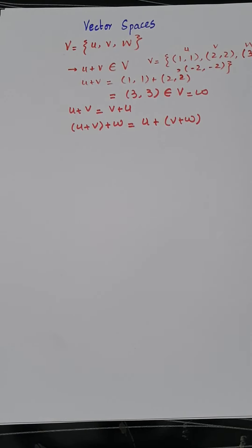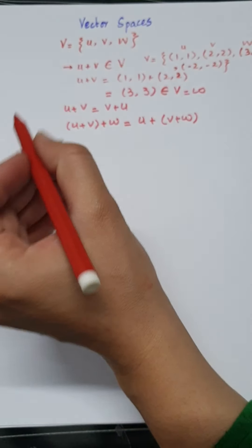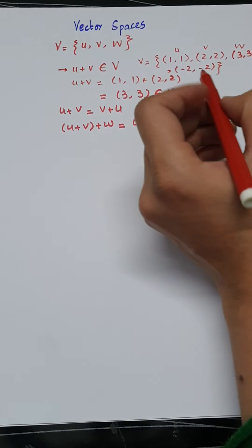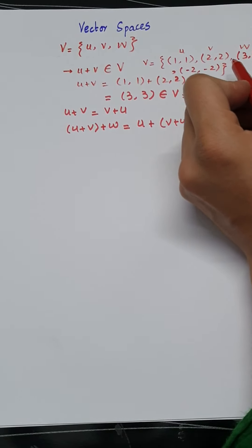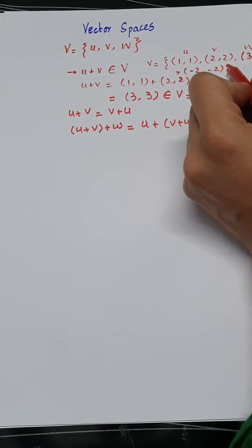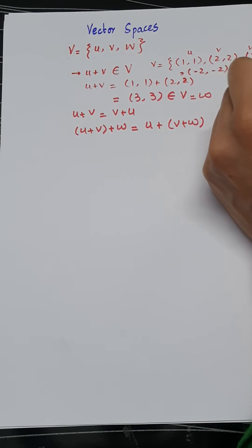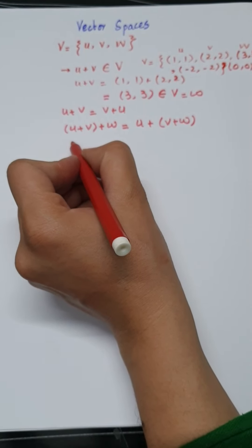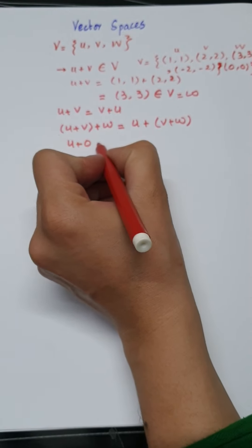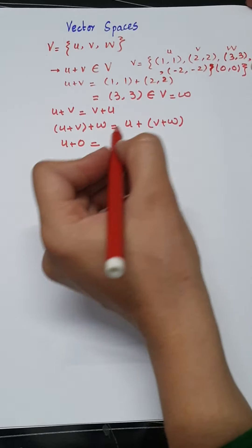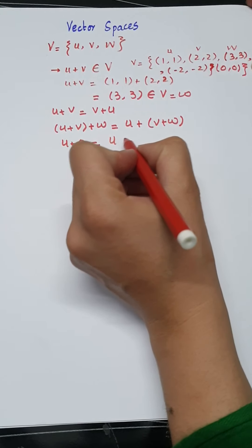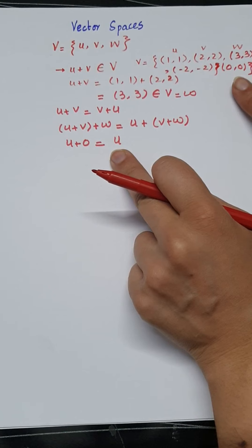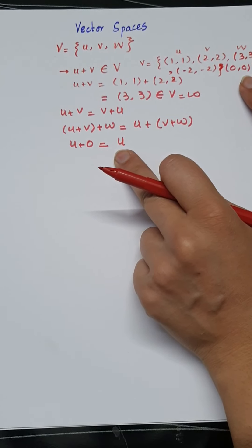The fourth property is that there is a zero vector in the vector space V such that U plus 0 equals U. The zero vector should be part of every vector space. If the zero vector is present and we add it to any vector, the resultant is the same. So the zero vector must be part of the set of vectors we claim to be a vector space.